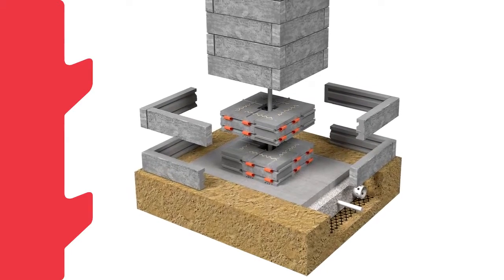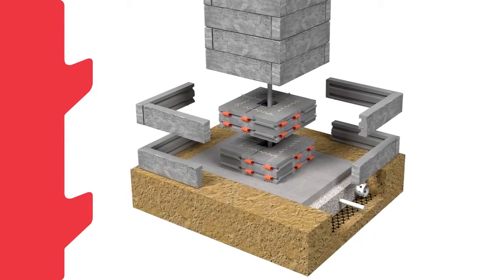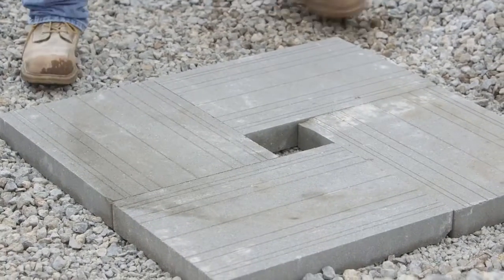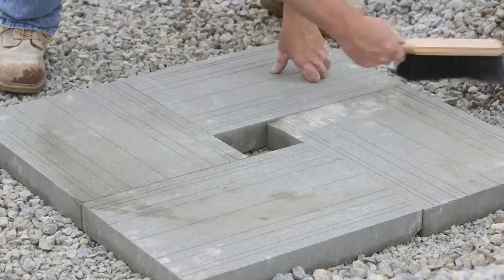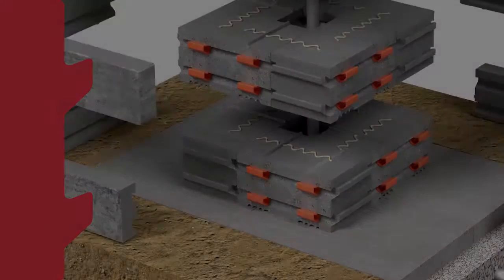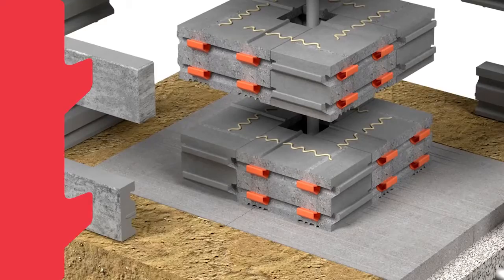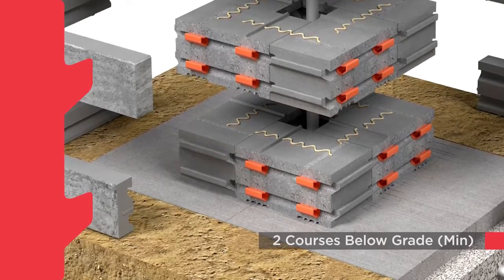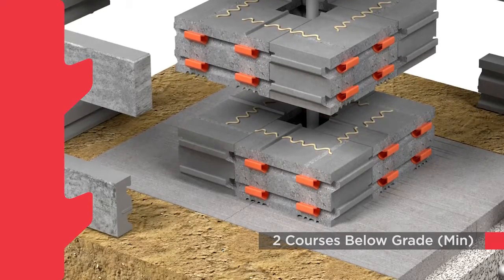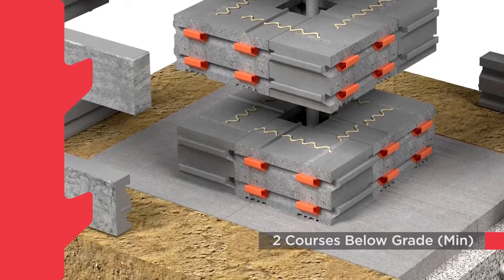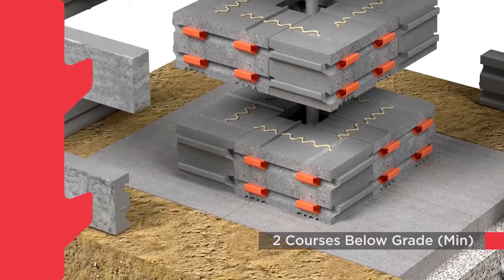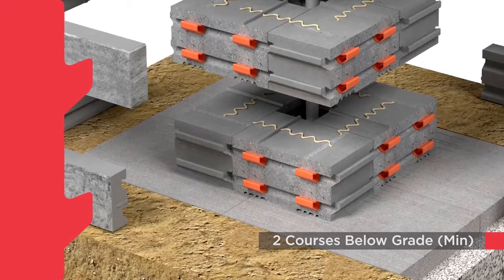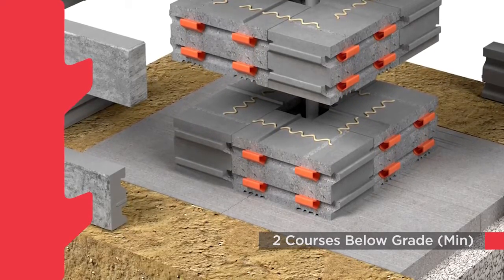The easiest way to construct a base pad for a Yukara pillar is by installing four universal base units in a square. Pillars require a minimum of two courses of backer blocks below the finished grade for stability. Although fascia panels are not required below grade, they will provide additional stability for the pillar assembly.